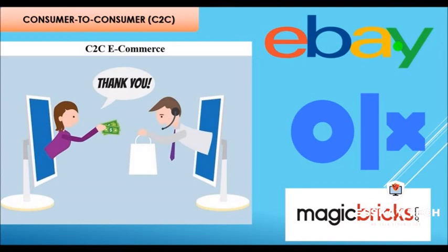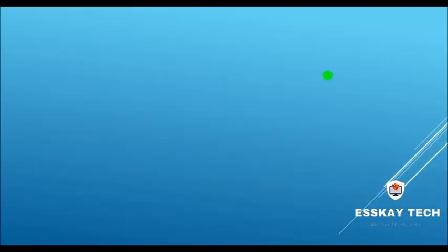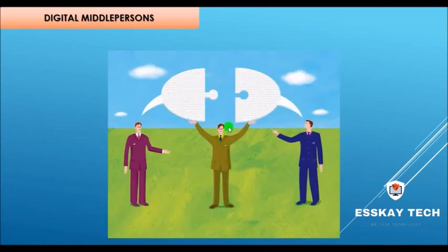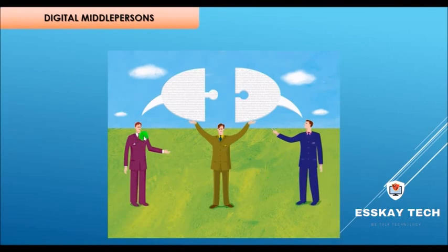eBay is one of the very old C2C websites, operating since 1995. The fourth mode is the digital middleman — a company that provides information about several different companies on a single website. The company gathers information about the same type of product and services, and a commission is charged for every sale or purchase. Google is an example of a digital middleman.